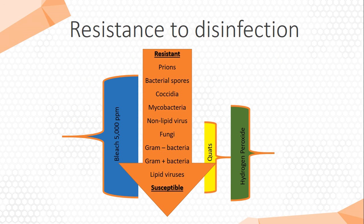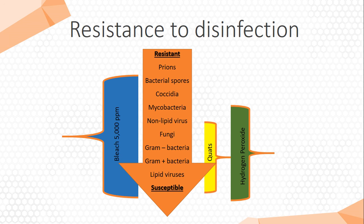Let's look at the spectrum. When you have resistance to disinfection, you can have different pathogens in the hospital environment. Bleach will cover from bacterial spores all the way down — it's a very strong disinfectant. Quaternary ammonium compounds are widely used because they're easy to use, sometimes quite cheap, and very soft for the environment. Hydrogen peroxide is also popular and has a broad spectrum; some products will cover bacterial spores, so you need to be aware of that when choosing the right product.